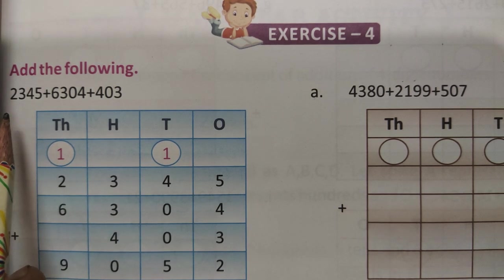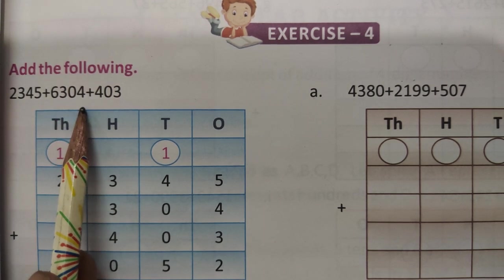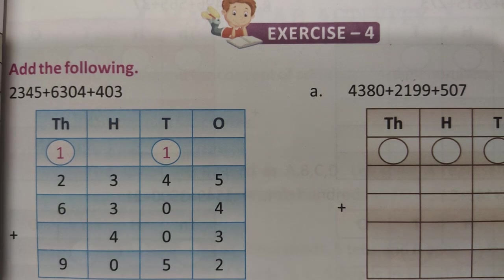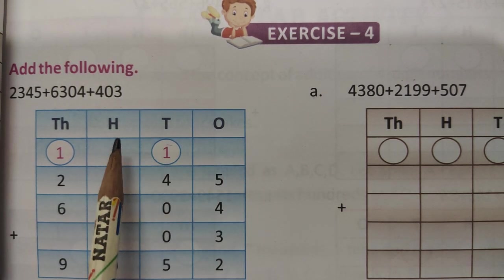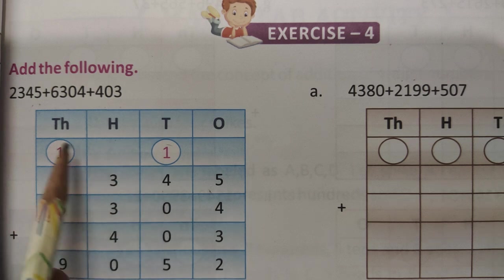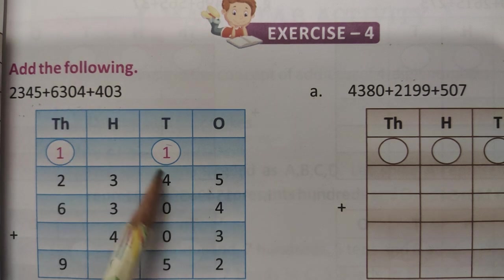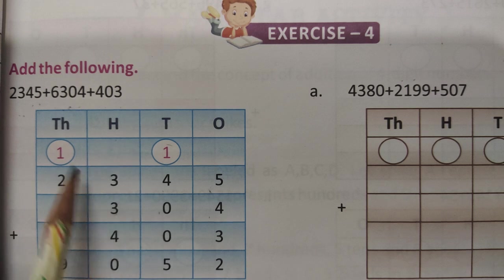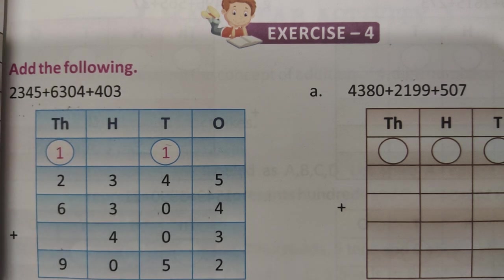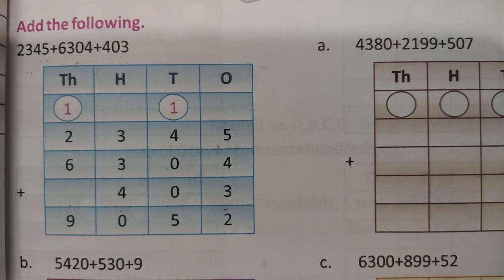Let's start students. First is 2345, the next one is 6304 and then 403. The positions is set 1, 10, 100 and 1000. Set the positions: 5 is 1, 4 is 10, 3 is 100 and 2 is 1000. The next number is 4 is 1 place, 0 is 10 place, 3 is 100 place and 6 is 1000 place. Next one is 403: 3 is 1 place, 0 is 10 place and 4 is 100 place. Add the following digits numbers.